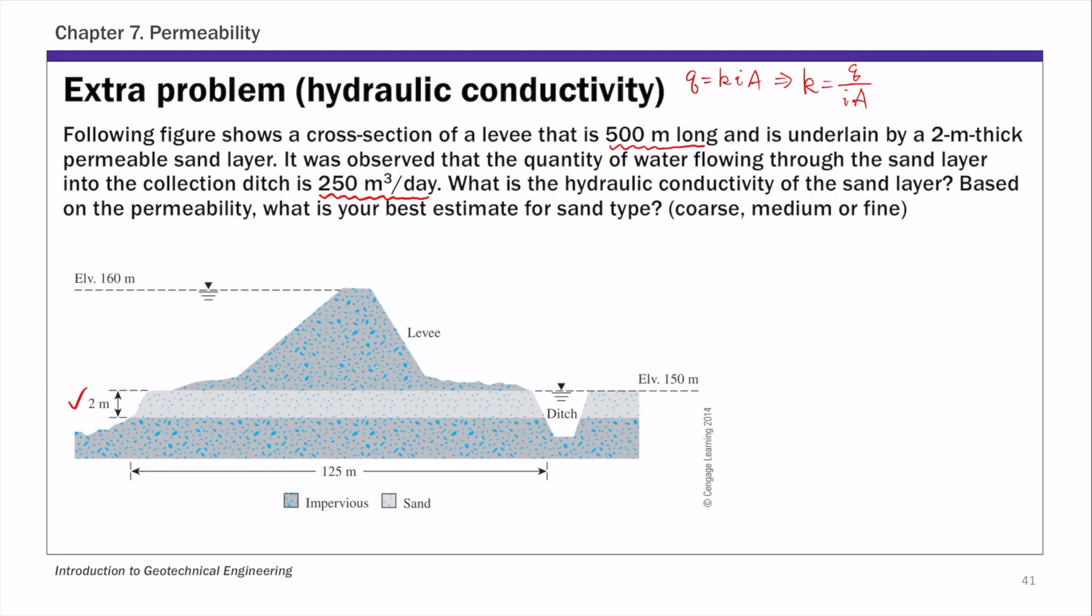Q is given as 250 cubic meters per day. First, let's look at A. A is the cross-sectional area, and for this example, water is flowing along this permeable sandy layer in a horizontal direction. So A is the cross-sectional area perpendicular to flow.